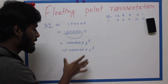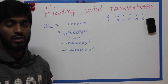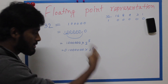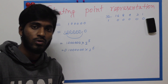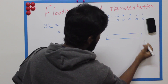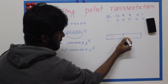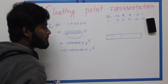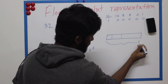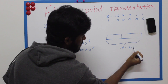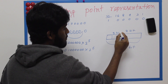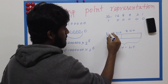We have a syntax — we have to draw that syntax. The syntax has: sign bit, exponent, and significant. The total is 14 bits: 1 bit for the sign, 5 bits for the exponent, and 8 bits for the significant.